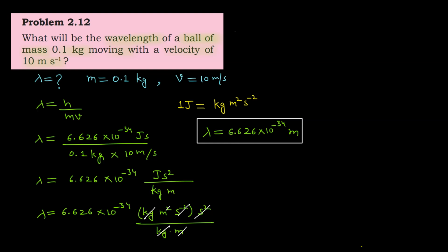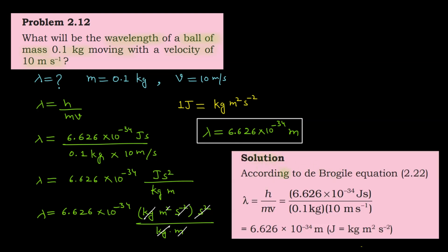Now let's check what solution is given in your NCERT. Solution according to de Broglie equation: lambda equals h upon mv. Here h value is put, mass 0.1 kg, velocity 10 meter per second. Answer came as 6.626 into 10 to the power minus 34 meters. Here in brackets they have written that joule is kg meter square per second square. If you want to know how 1 joule equals kg meter square per second square, you can ask in comments. See you in the next question. Bye bye.